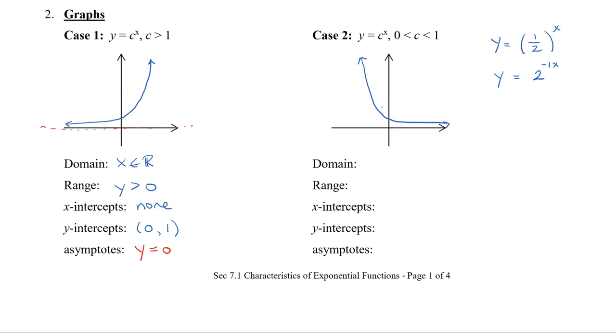Now, for both of them, however, the domain is still all real numbers. The range is still greater than 0. No x-intercepts. One y-intercept is 0, 1. And an asymptote, again, of y equals 0. So in terms of the features, they are identical. The graph is flipped here.